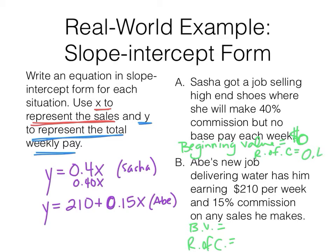And then that rate of change is 40%. Because as the sales get made, she's making 40% of each one. If she sold one dollar in sales, maybe she sold a shoelace, she'd get 0.4 or 40 cents of that dollar. What's the beginning value for Abe? If he doesn't make any sales, he makes $210. And then his rate of change is every dollar of sales he makes, he makes 15 cents.